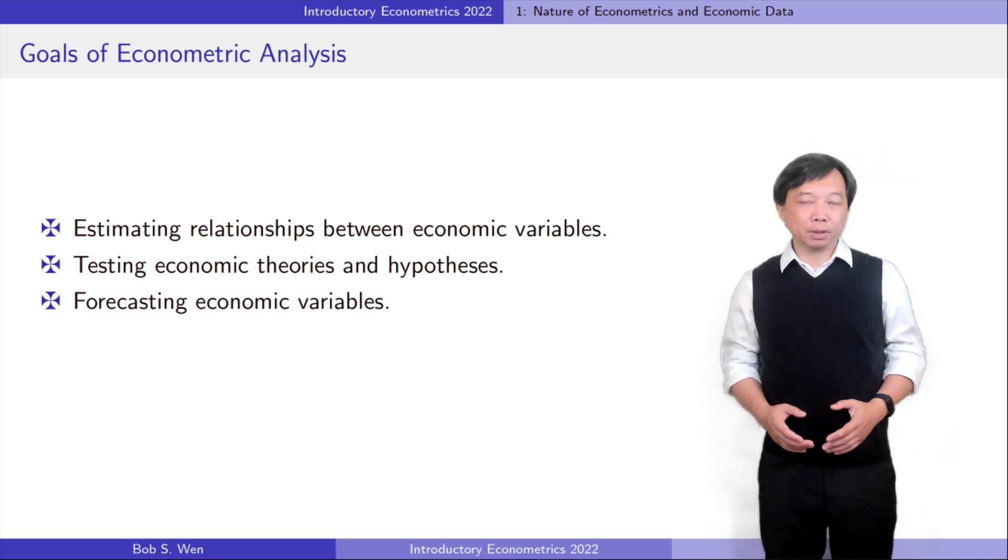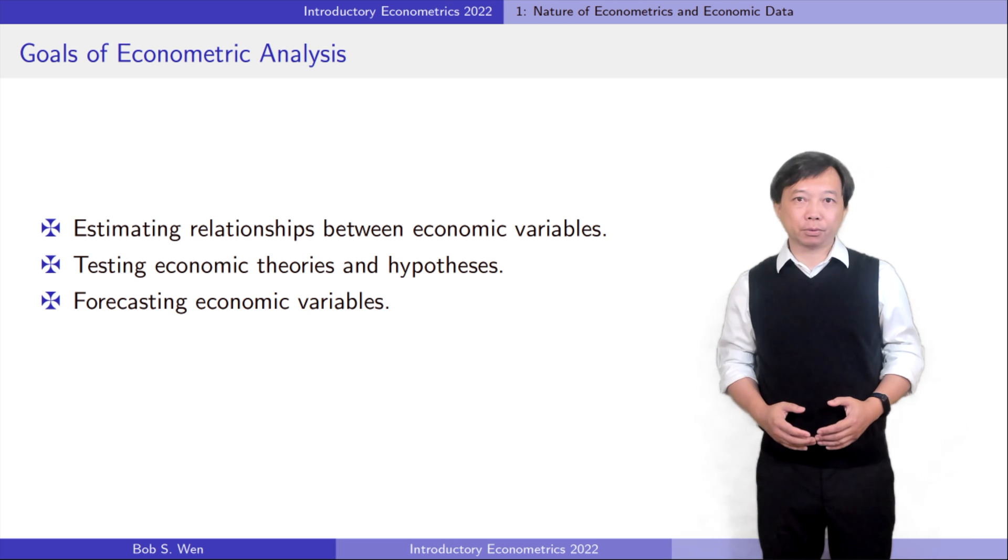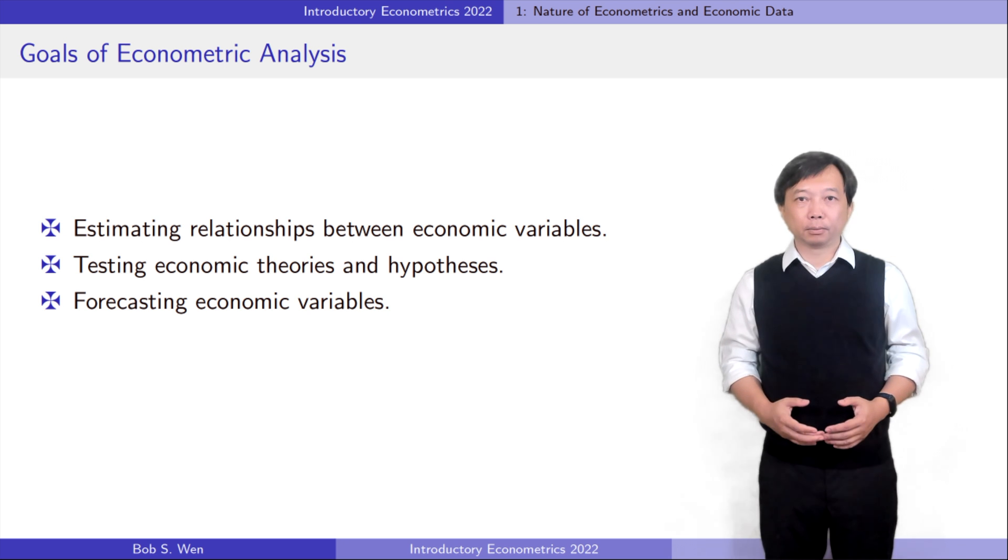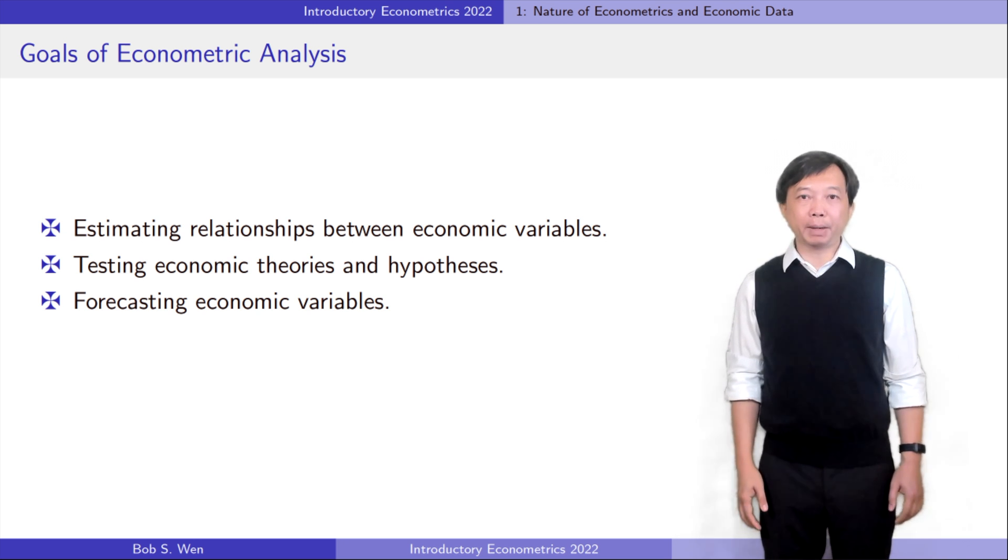The third goal econometrics tries to achieve is to forecast economic variables. How much will the U.S. GDP grow next year? What will be the CPI next month? Economists rely on econometric models to make forecasts.